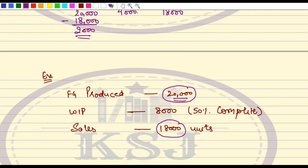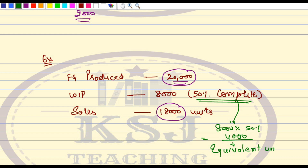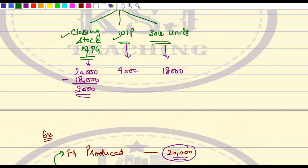The second point is about WIP. When it says WIP is 50% complete in all respects, it doesn't mean it has converted into a finished good — it means that up to 50% of the cost has been incurred on these units. So what we do is: 8,000 multiplied by 50% equals 4,000. This 4,000 is your equivalent units. WIP means the goods have not yet been transferred to the finished goods godown; 50% of the cost has been incurred, equivalent to 4,000 units.